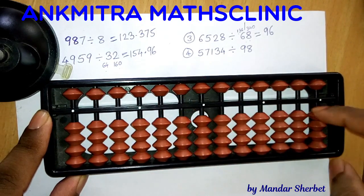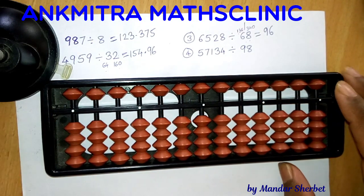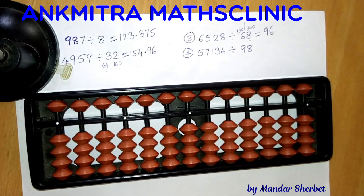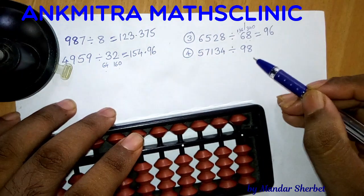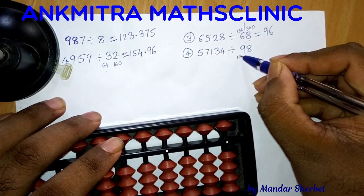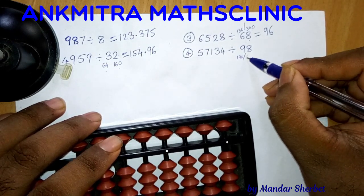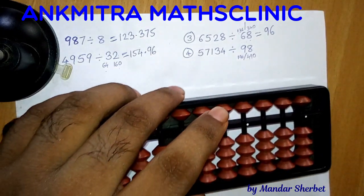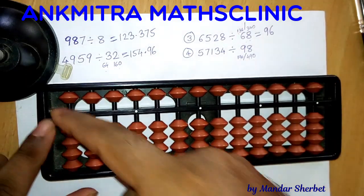Now let's move to the next example — a five-digit number divided by a two-digit number. As usual, we'll calculate two times and five times the divisor beforehand. Two times 98 is 196, and five times 98 is 490. I've written both values below the main divisor and I'll start placing the question set on the rods.